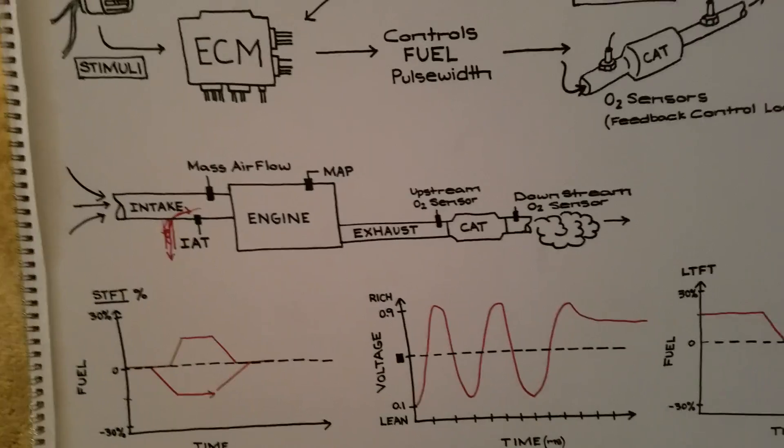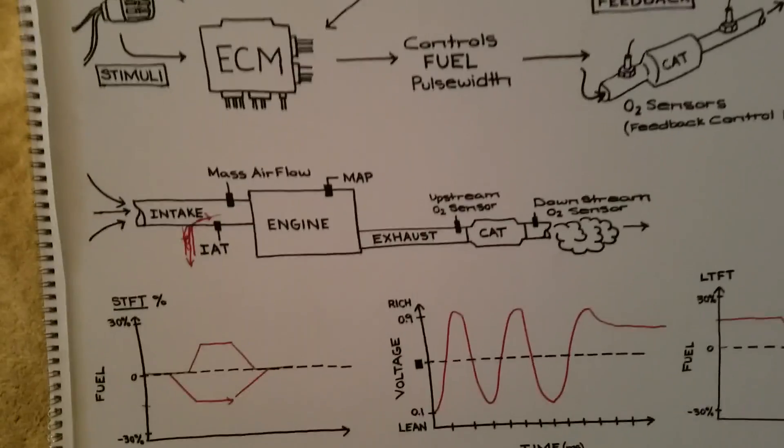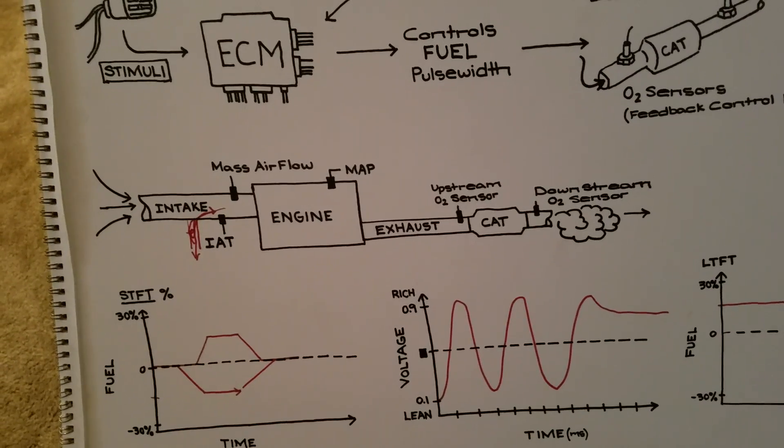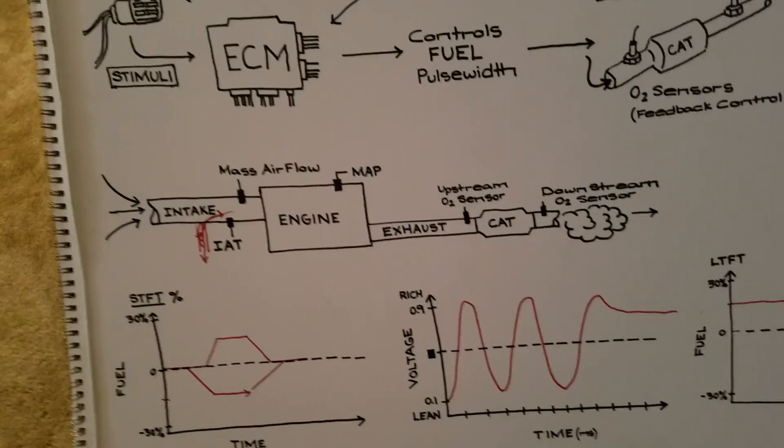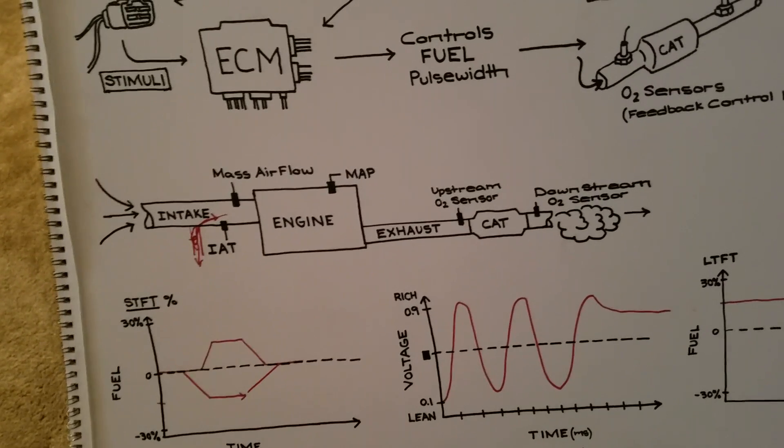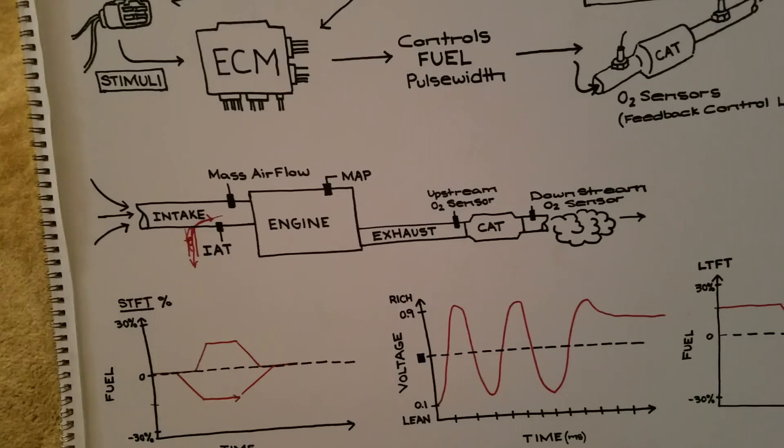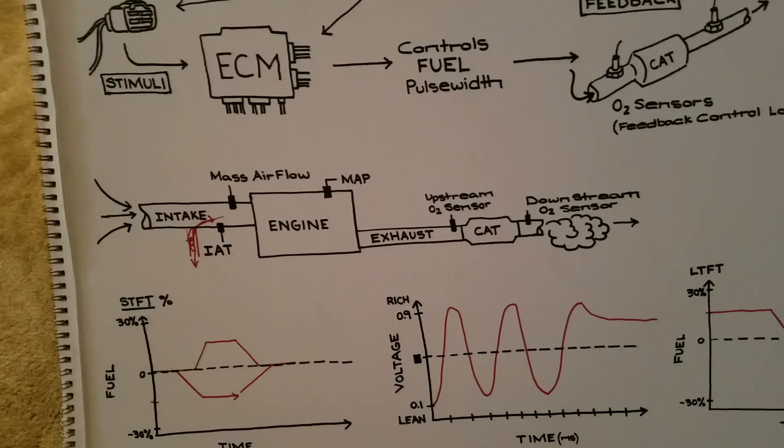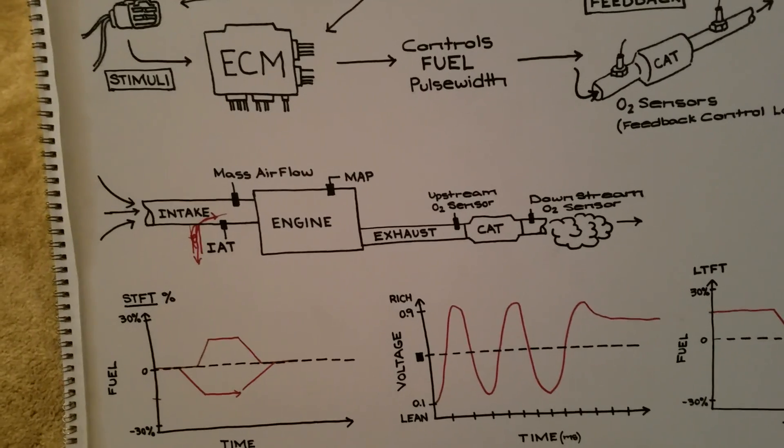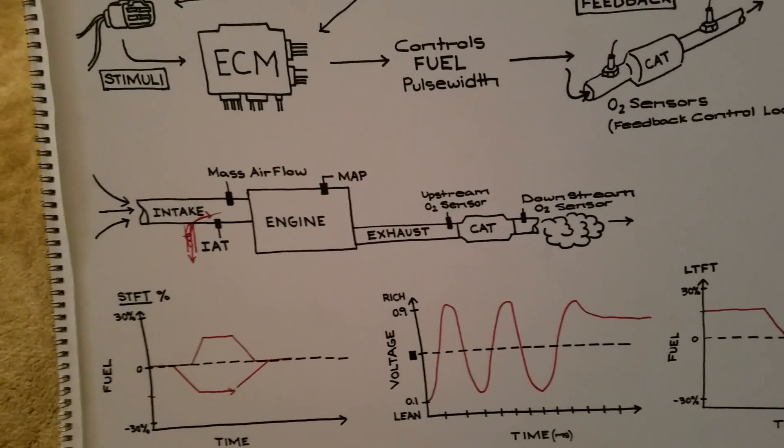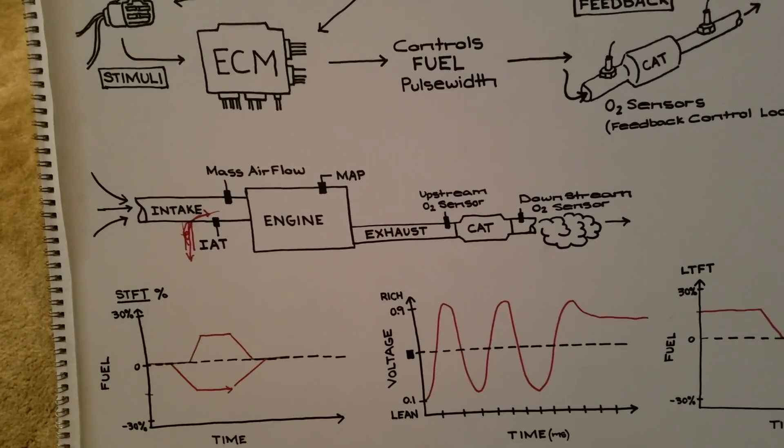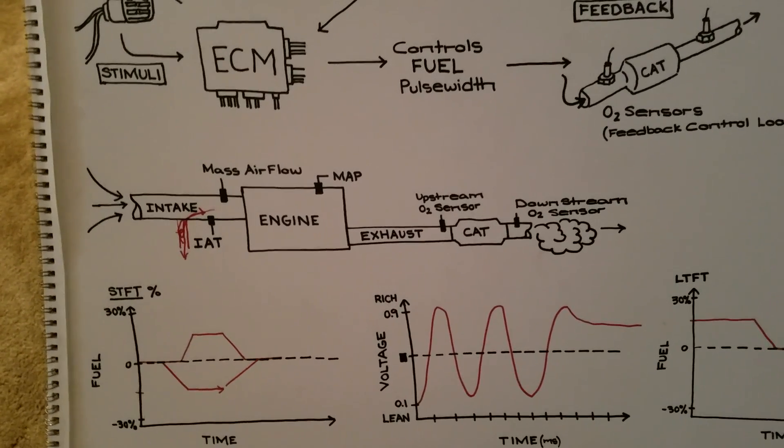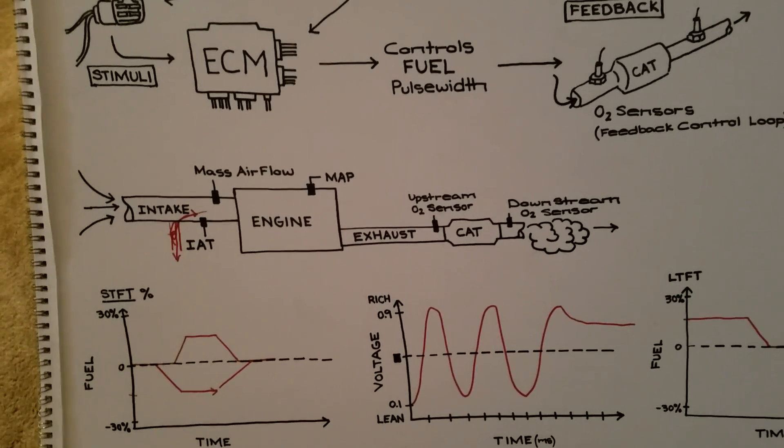My second diagram is a little bit more detailed. Basically what I drew was the sensors that are involved in maintaining your fuel trim. You've got the intake to the engine, you've got your exhaust. On your intake you have various sensors that measure your volume, you know, mass airflow sensor, that's a big one. It tells the computer how much air is coming into the engine. The computer takes that data and controls how much fuel it adds to it.